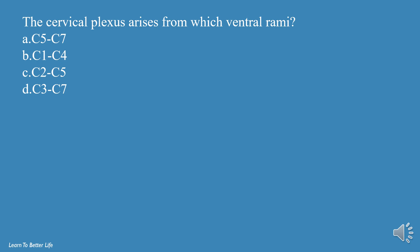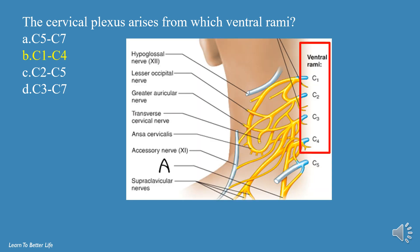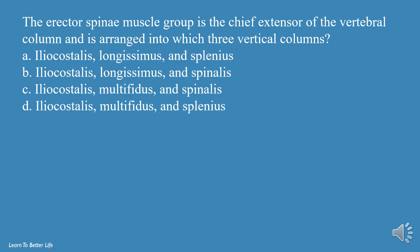The cervical plexus arises from which ventral rami? a. C5-C7, b. C1-C4, c. C2-C5, d. C3-C7. The answer is b, C1-C4.